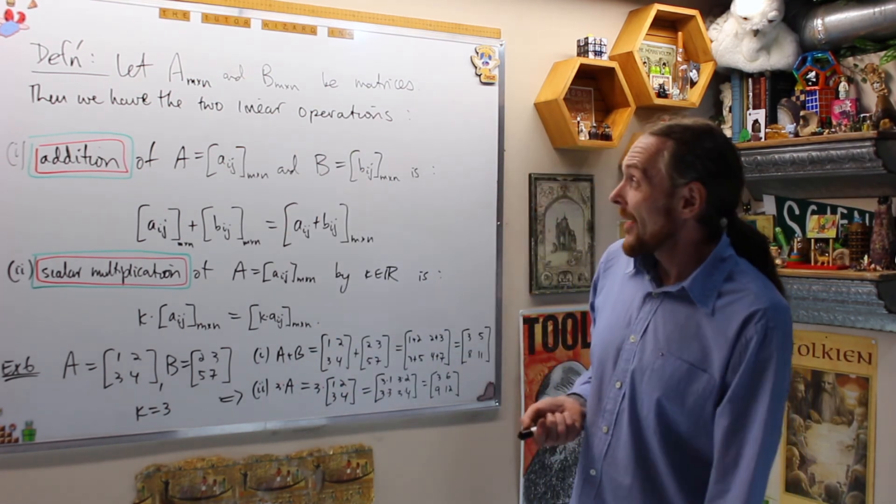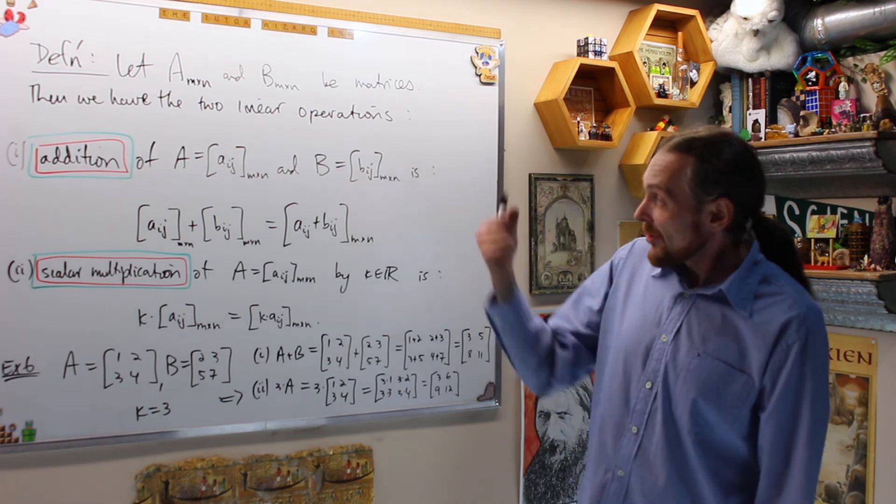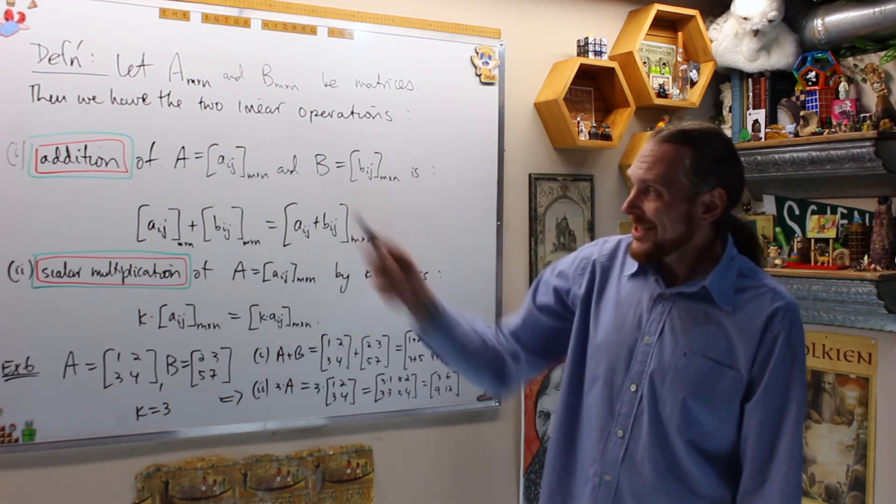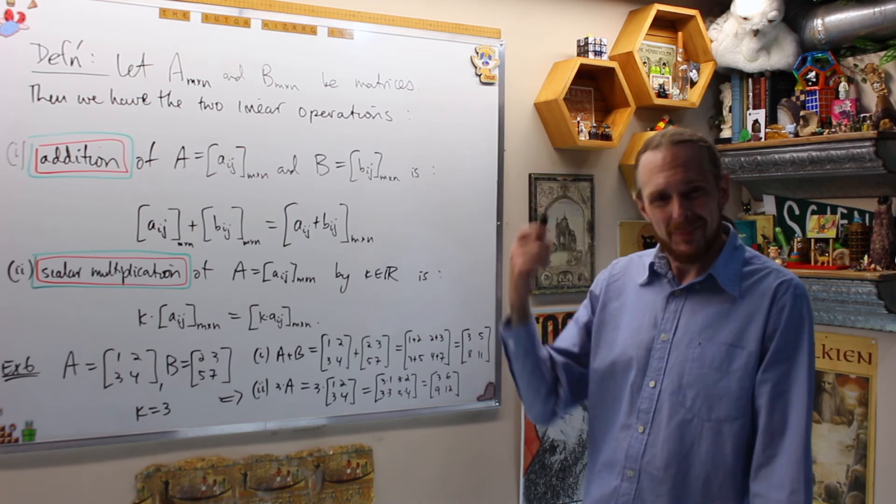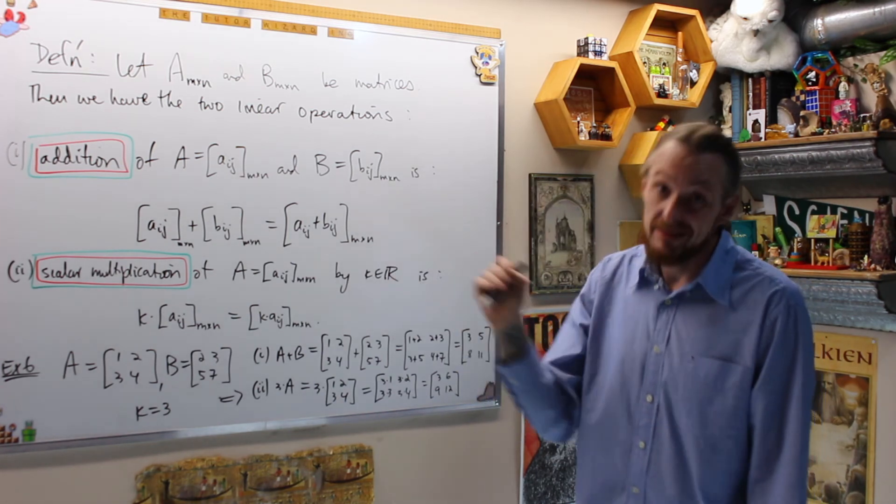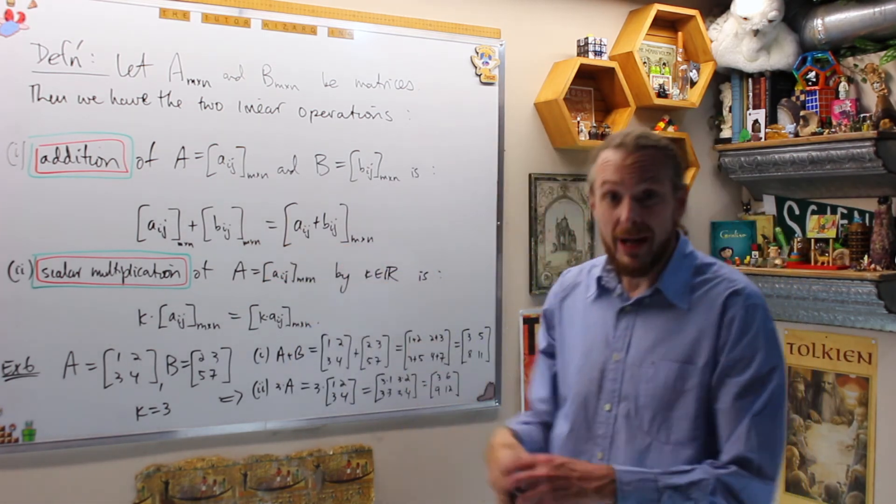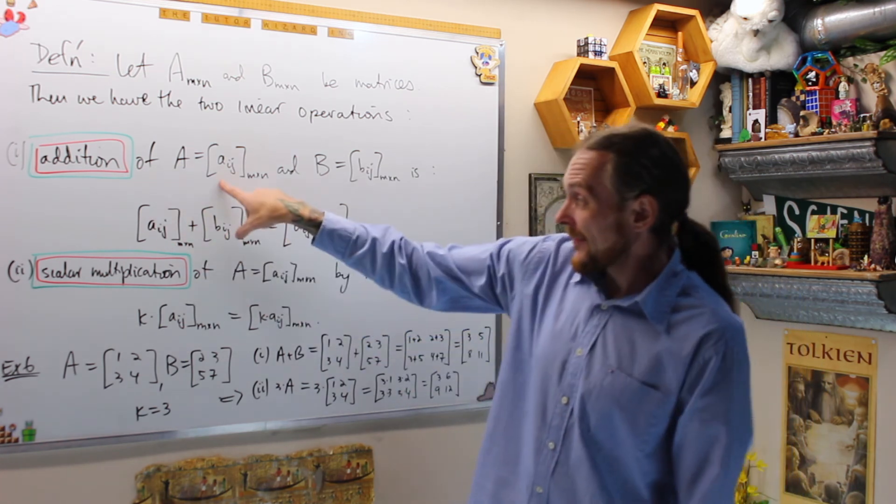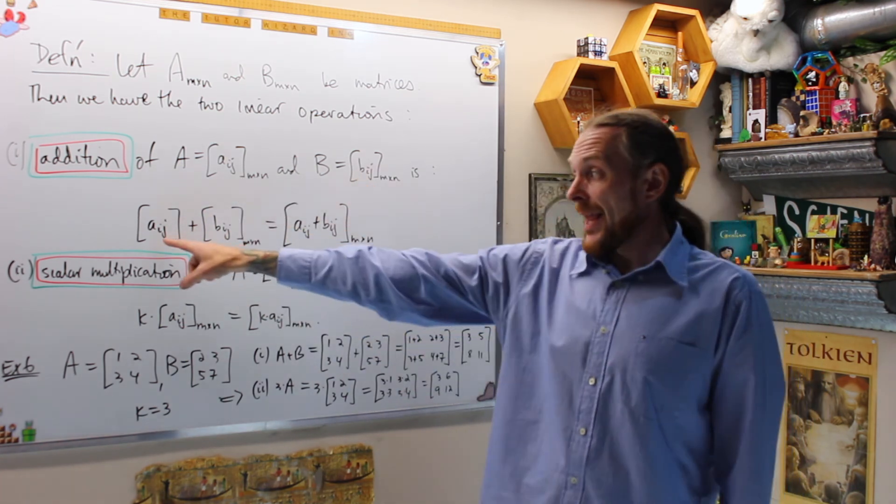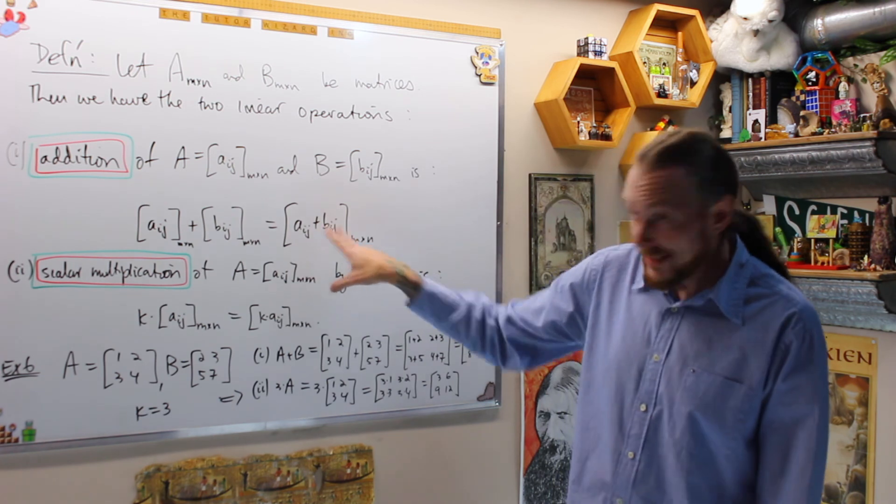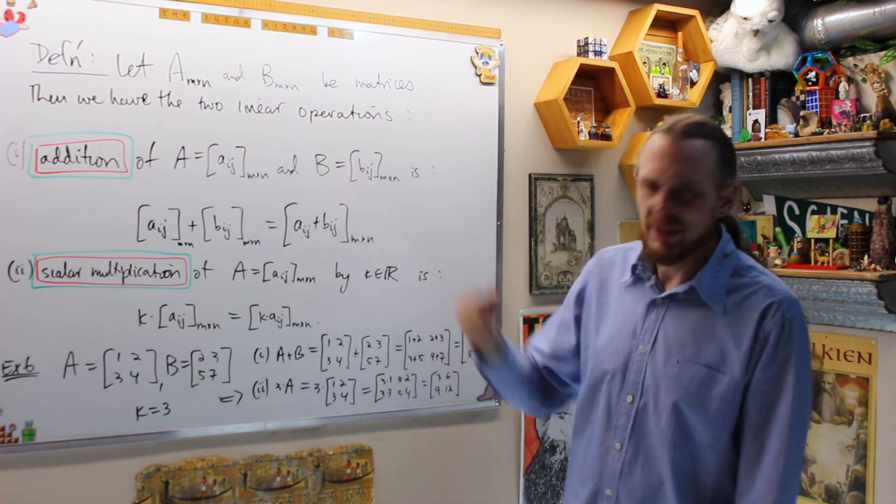Let A and B be n by n matrices. We have two linear operations. Addition of A and B of two matrices of the same size, this is important, is defined coordinate-wise, we say. What that means is, if this is A and this is B, then Aij plus Bij is adding each of those corresponding entries.